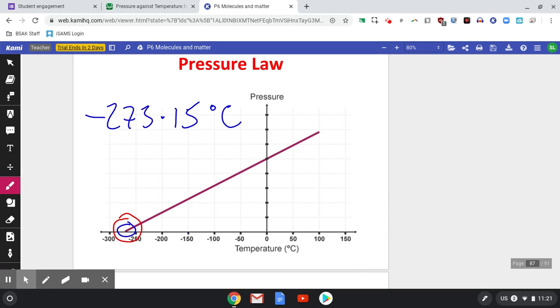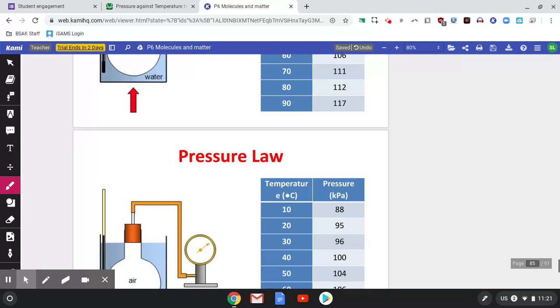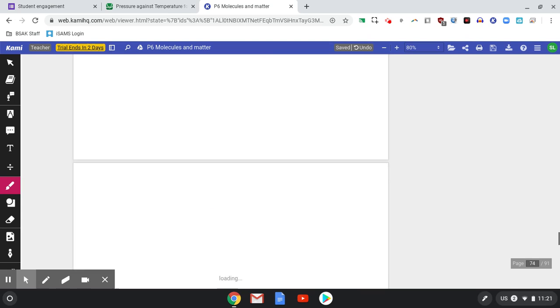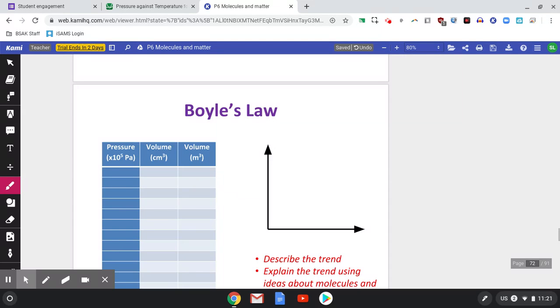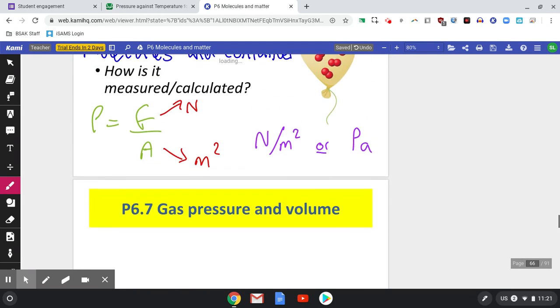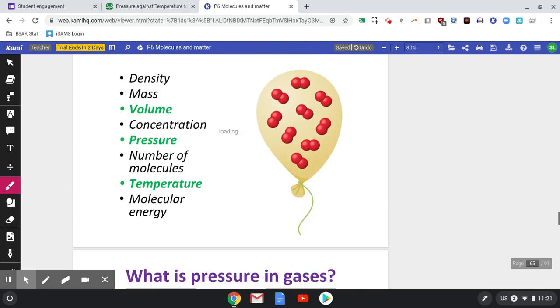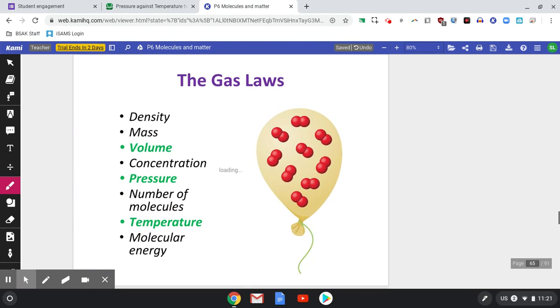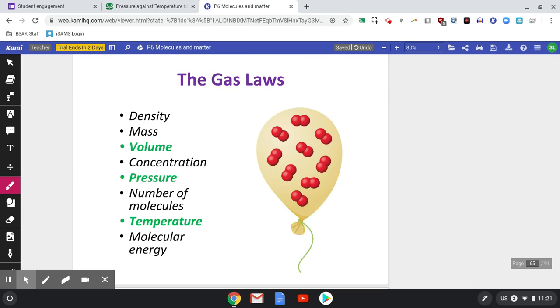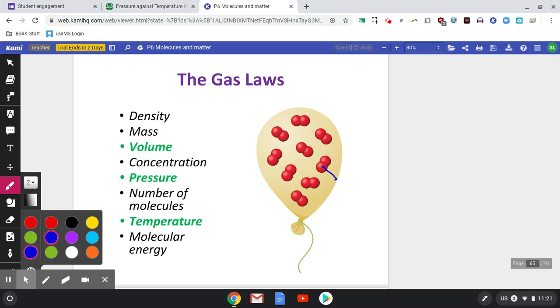Now why we've got zero pressure at this temperature should be quite obvious. At this temperature, let's go back to the balloon, remember the balloon at the start? There it is. Now we've got all these molecules whizzing around really quickly because they have kinetic energy.